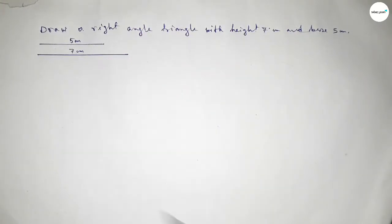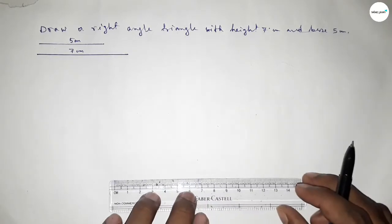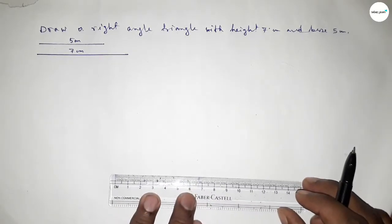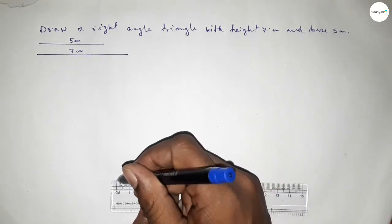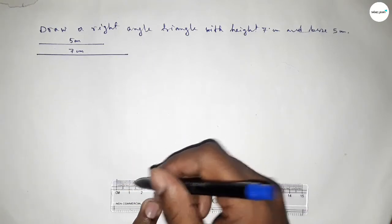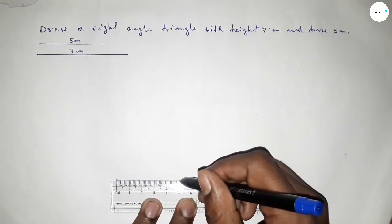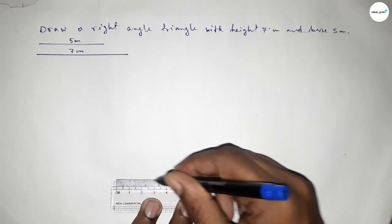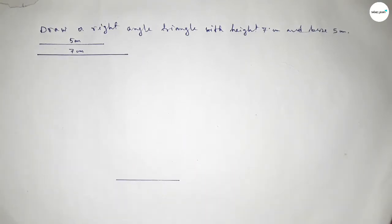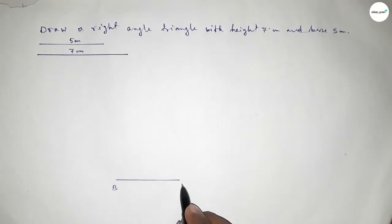Now we draw a line of length 5 centimeter, starting from zero to five. This is the base of the triangle. We take here point B and here point C.